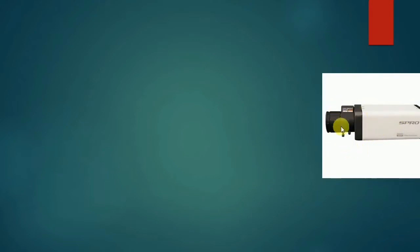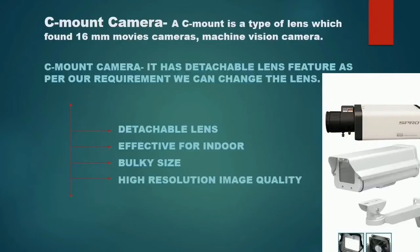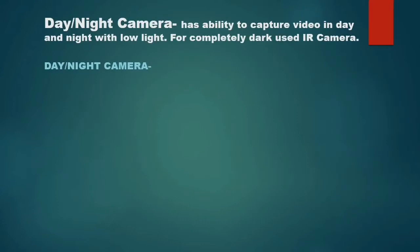The next camera is the C-mount camera. The C-mount camera has detachable lenses, is effective for indoors, has a bulky size, and delivers high resolution image quality. It is mostly used in movie cameras.